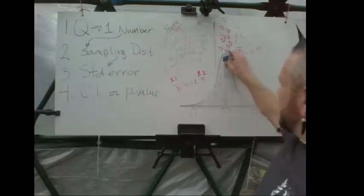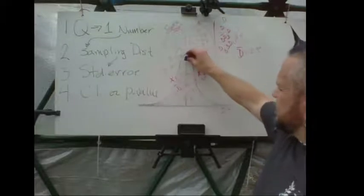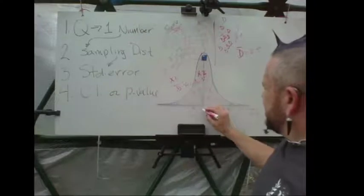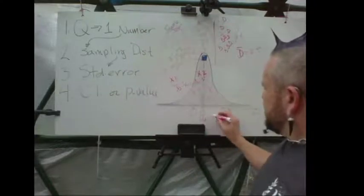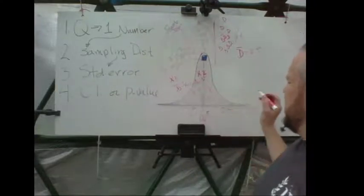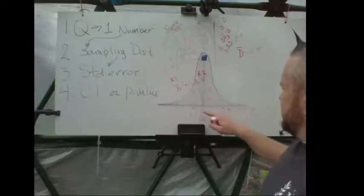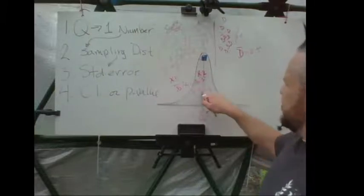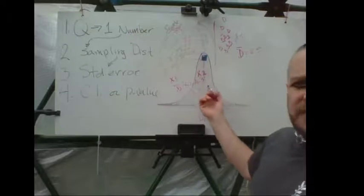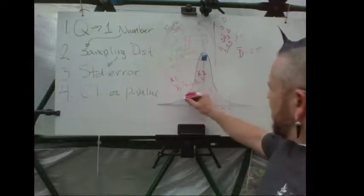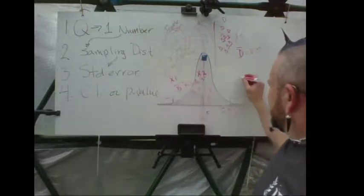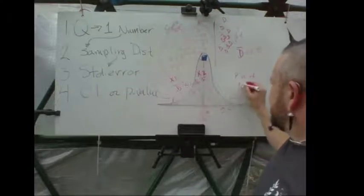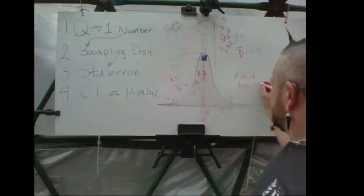Or, the null hypothesis is that the true mean difference should be zero — that's mu-zero. You center your distribution over zero, use the same standard error, and compare P to alpha. If P is less than alpha, you reject the null hypothesis.